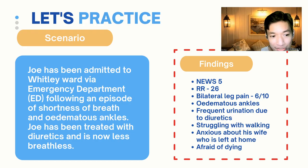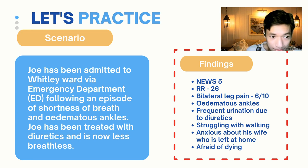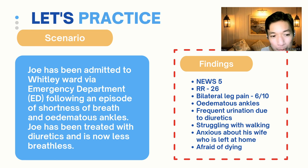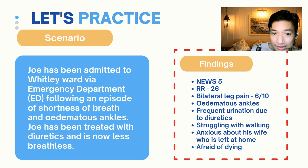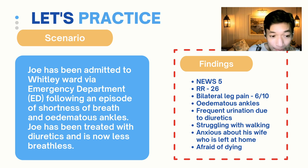Now we'll proceed to practice. The scenario: Joe has been admitted to Whitley Ward via the emergency department following an episode of shortness of breath and edematous ankles. Joe has been treated with diuretics and is now less breathless. Pretend you've done your assessment station and performed your A-to-E assessment. The findings: NEWS score is five, respiratory rate is 26, bilateral leg pain, pain score six out of ten, and frequent urination due to diuretics.